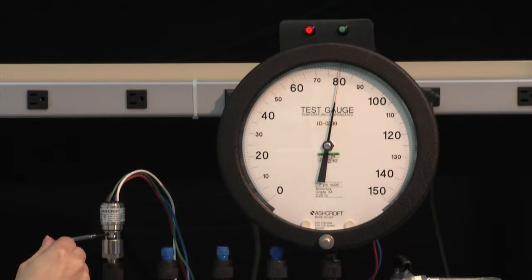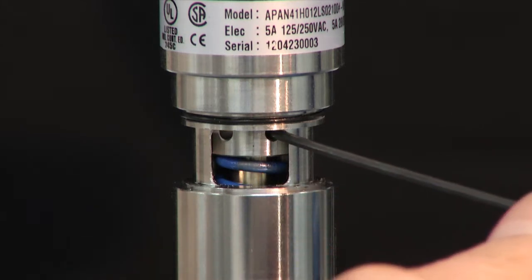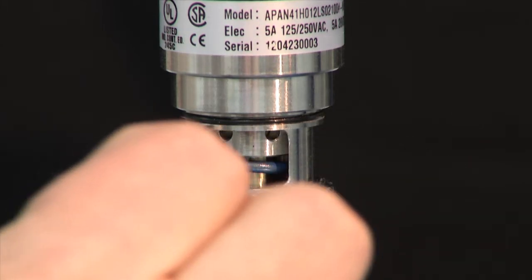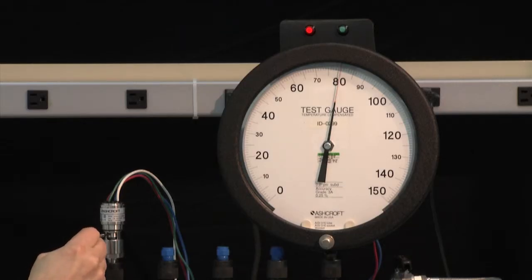Now we will turn it back counterclockwise and that will set the switch to turn on at 80. We will go slowly until it just turns on. It just turned on.